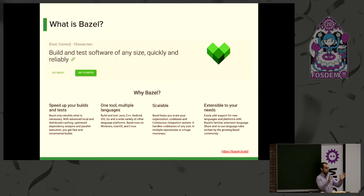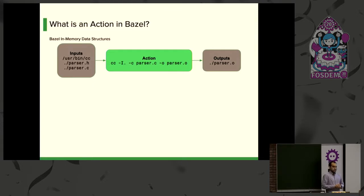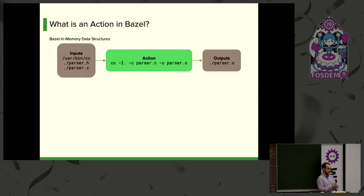The basic concept we need to understand for this talk is Bazel actions. A Bazel action is essentially a command invocation. Like in make, any command that make runs becomes an action in Bazel. Bazel represents this in memory with a data structure called an action, which contains a command line. In this example, a cc compile takes a source file and generates an object file. As part of the action, we register in memory what the inputs are and what outputs we expect.